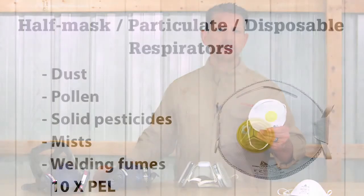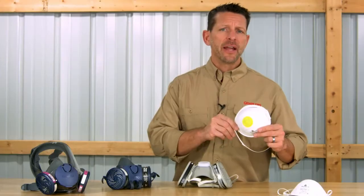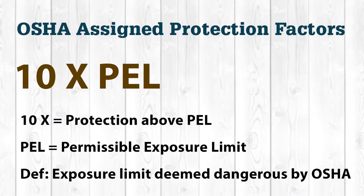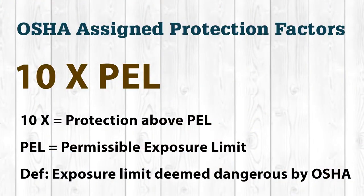Starting with the disposable respirators, these are used to protect the wearer from dust, pollen, mist, welding fumes, and certain pesticides applied in solid form. These masks provide a 10x PL level of protection. The 10x PL refers to the assigned protection factors, or APF, of the respirators. A respirator with an APF of 10 that is properly selected, fitted, and worn will protect the employee from exposure levels up to 10 times the permissible exposure level, which is the exposure level deemed to be dangerous by OSHA.